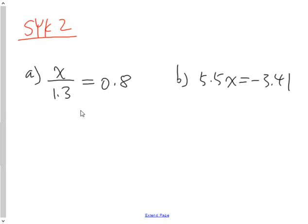So this says a number divided by 1.3 is equal to 0.8. So I'm going to multiply both sides by 1.3. That's the opposite of dividing by 1.3, and I'm left with x.